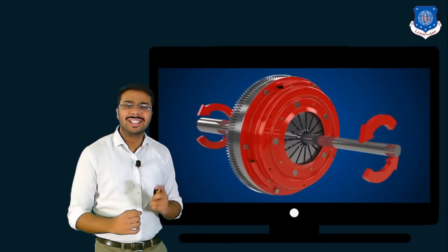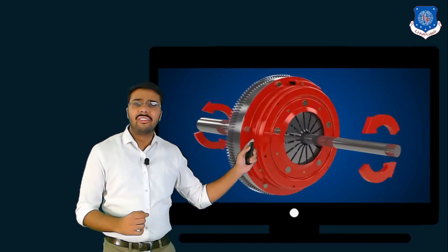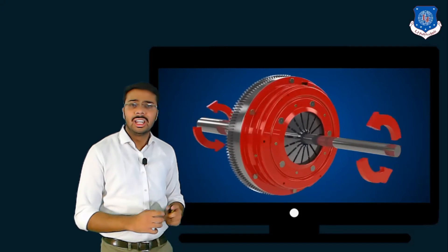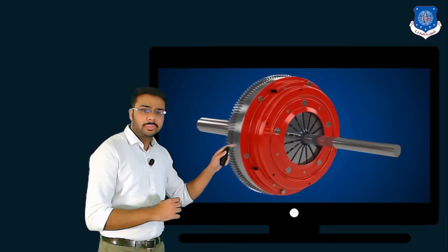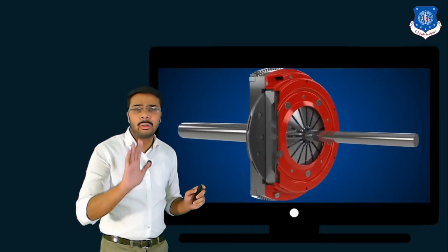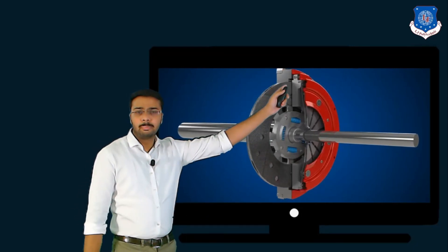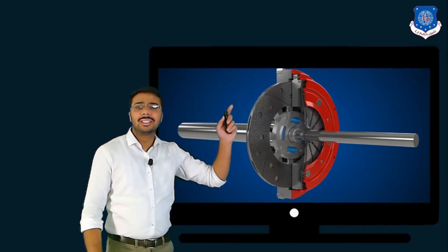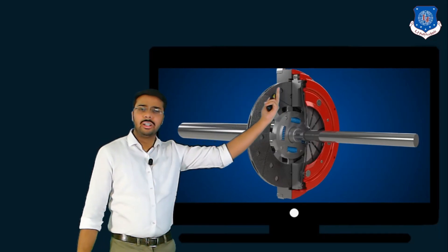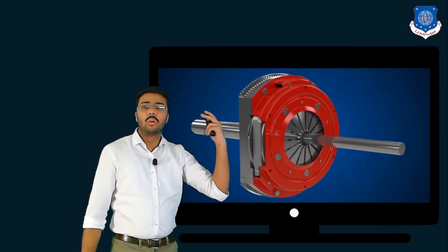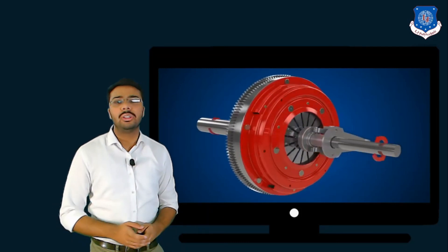Now let us understand the actuation of diaphragm spring and pressure plate. Here notice on the screen, from this side, when the pedal is depressed, the diaphragm spring pushes on the pressure plate via pivoting action. Thus the pressure plate is moving to and fro, causing engagement and disengagement of clutch.